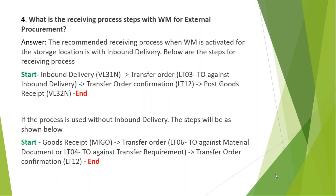If you don't use inbound delivery, the receiving process steps are different. First, we post goods receipt — once done, the system automatically updates the quantity at the IM level and accounting entries are posted: stock account debit and GR clearing account credit. Once you post MIGO, the system generates a transfer requirement.